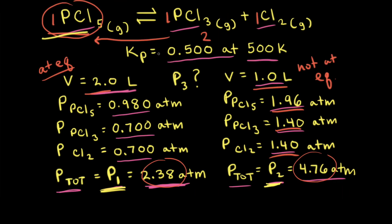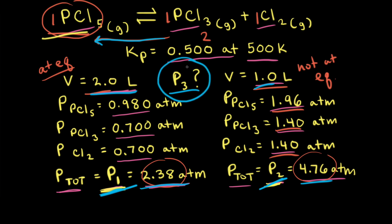Going back to the original problem, if our goal is to find P3 relative to P1 and P2 without all the math: we decreased the volume by a factor of two, which doubled the total pressure. Then the net reaction moves left to decrease the pressure, but since it won't move much, the final pressure P3 will be a little less than 4.76 atm but greater than 2.38 atmospheres.